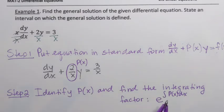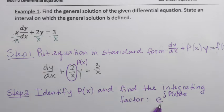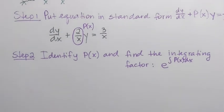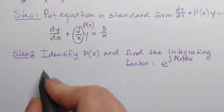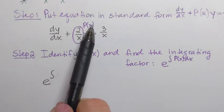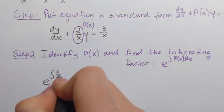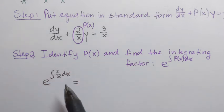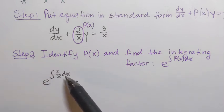Once we find the integrating factor, we'll multiply every single term of our equation by it. To find it, we set up e raised to the integral of P(x) dx, which is the integral of 2/x dx. We can pull the 2 outside the integral, giving us 2 times the integral of 1/x dx. The antiderivative of 1/x is ln|x|, so we have e to the power of 2 ln|x|. We don't write plus C here.